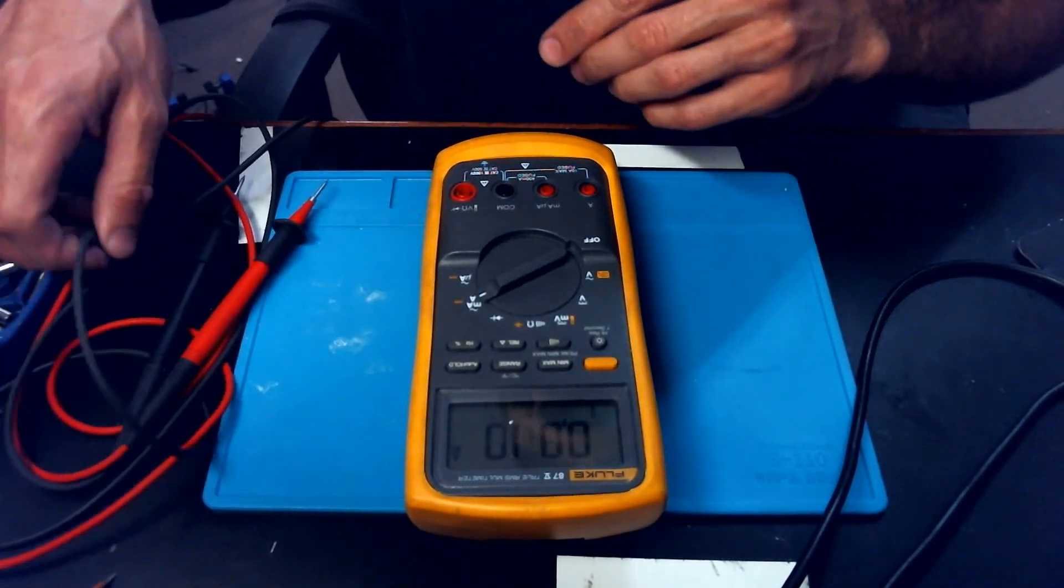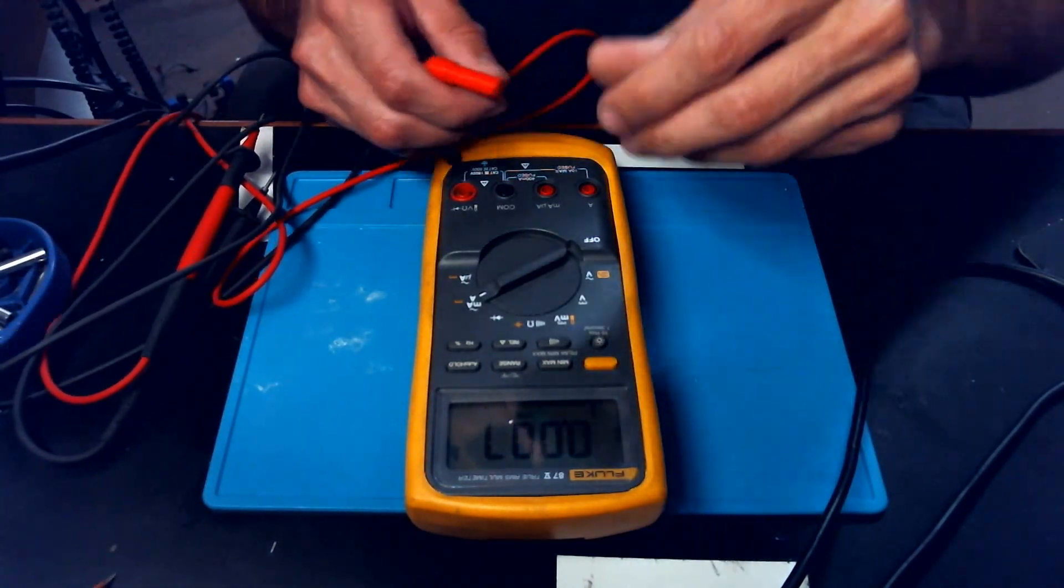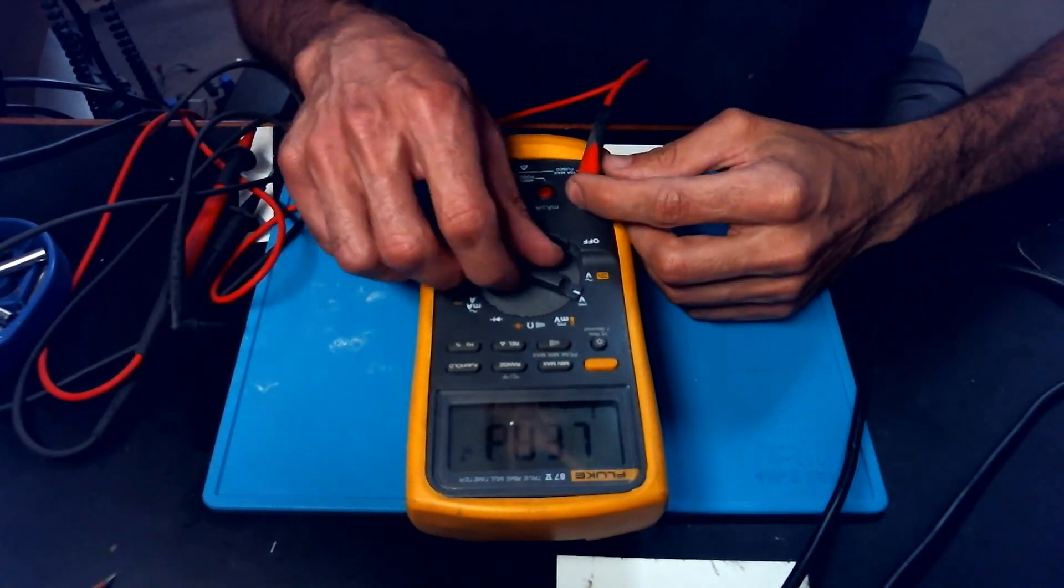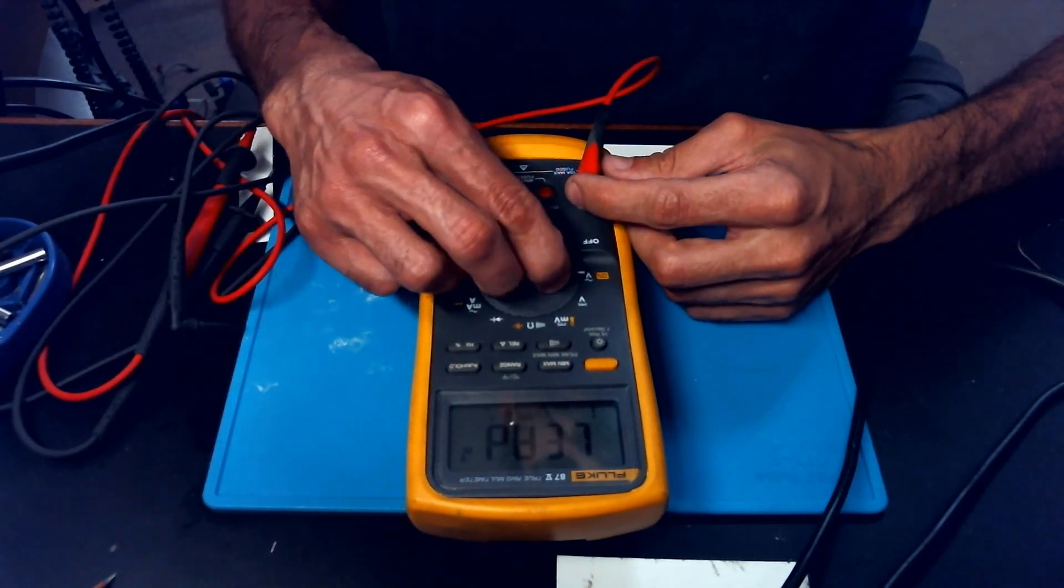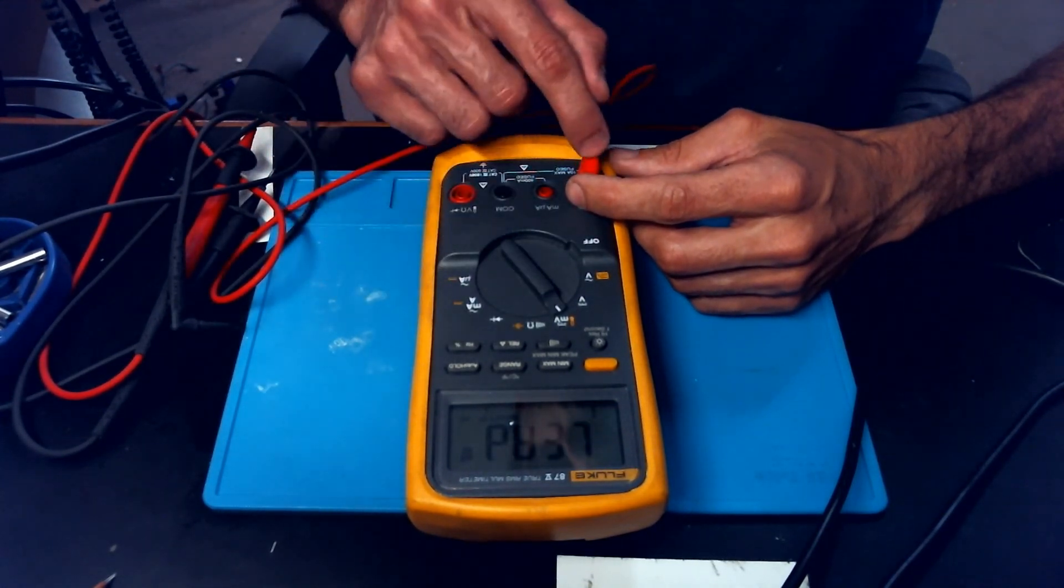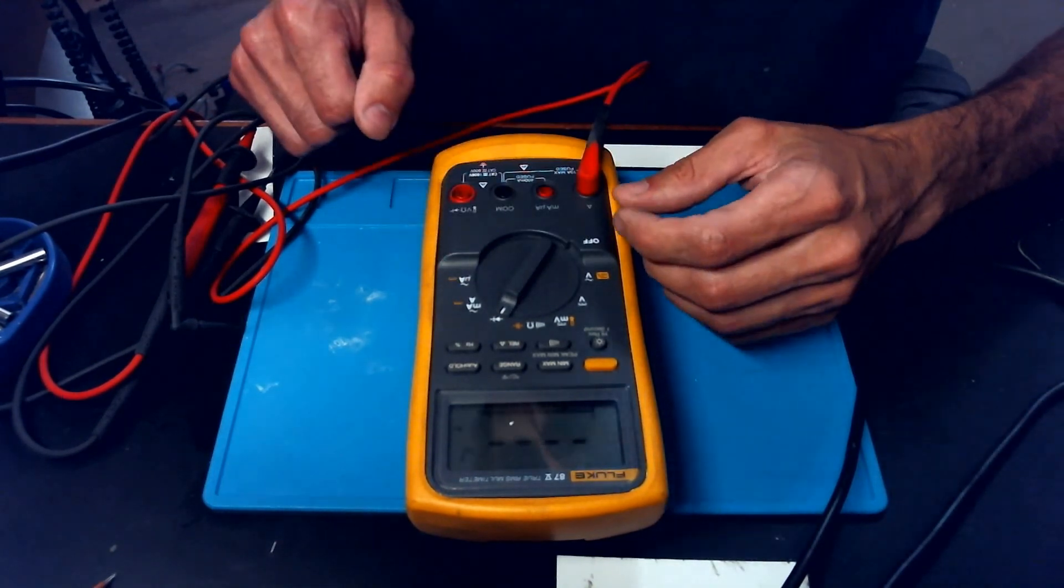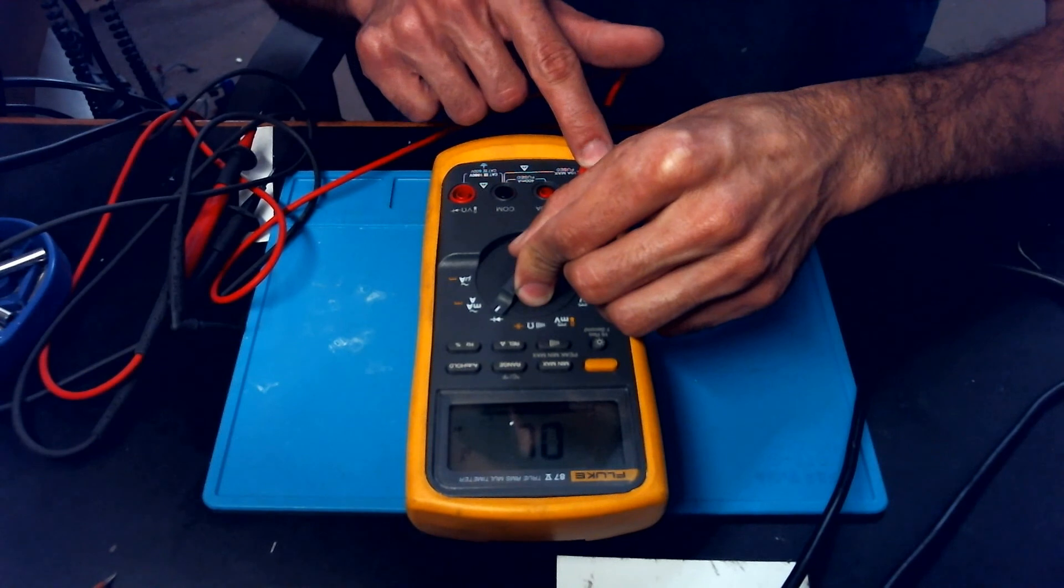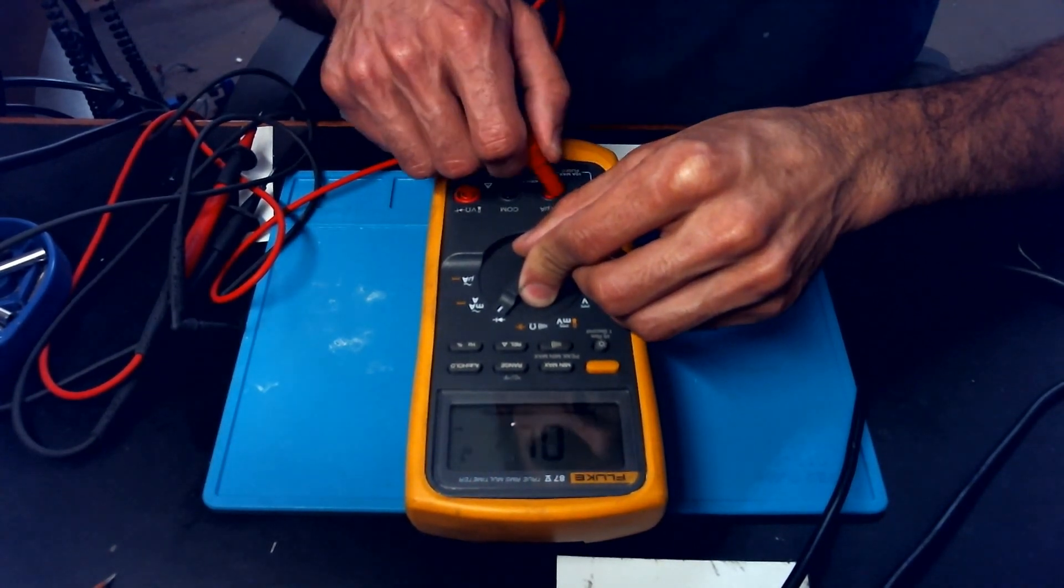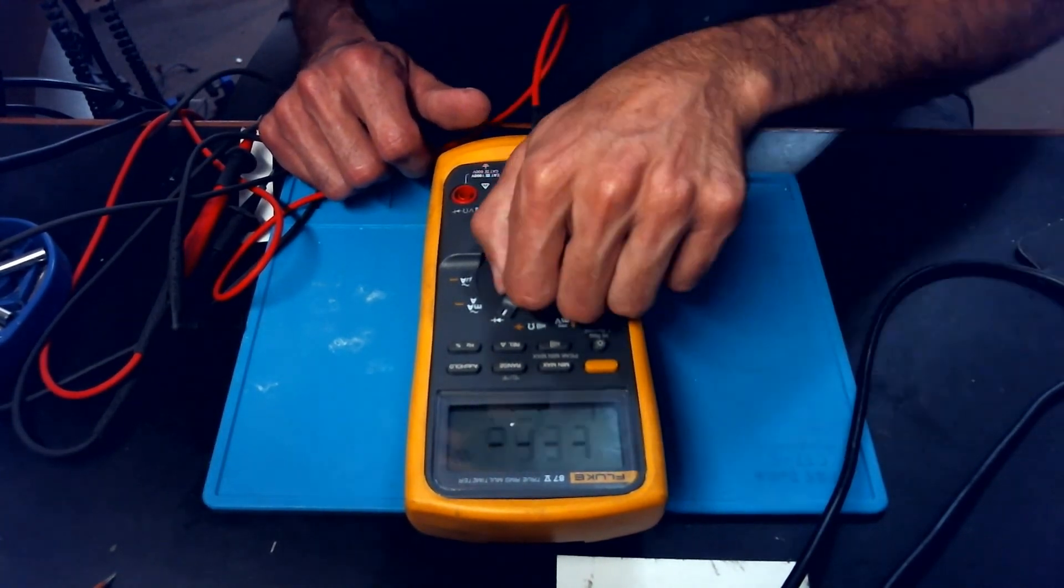I want to go ahead and show the input alert. The input alert is going to go off any time you have a jack into the amps or the milliamps and you're not on one of those functions.